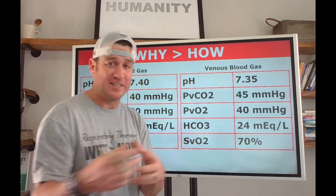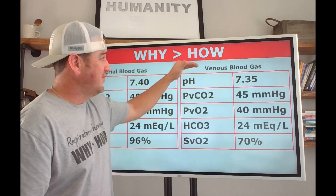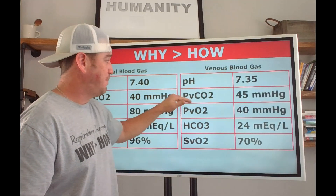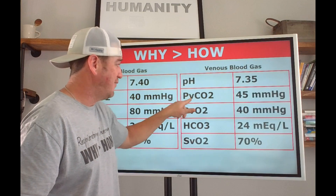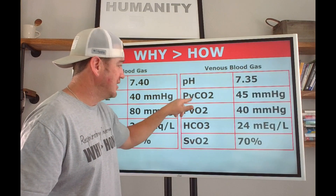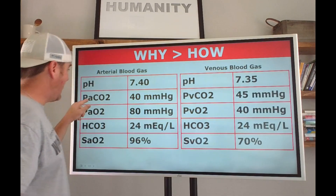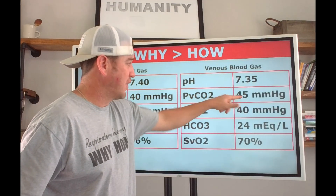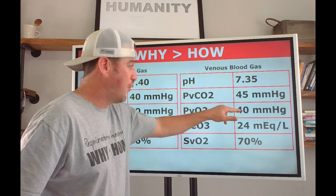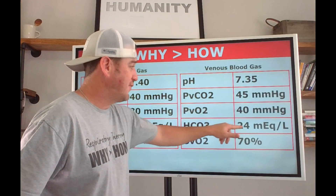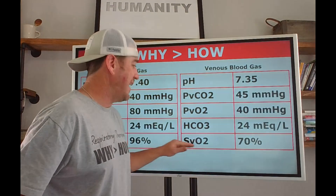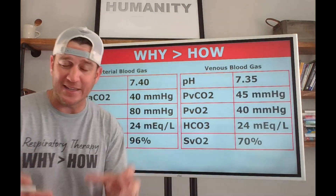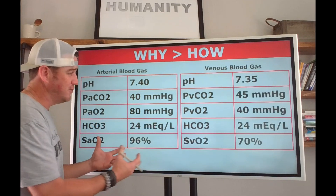On the right side of your screen we see normal values for a venous blood gas: pH 7.35, PvCO2 45 — the 'v' tells you you're looking at venous blood, the 'a' tells you it's arterial — PvO2 40, bicarb 24 mEq/L, and SvO2 70%. Take a second and look at these values and tell me where you see the big differences.